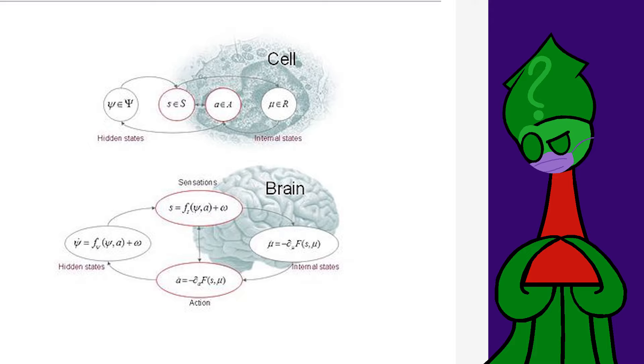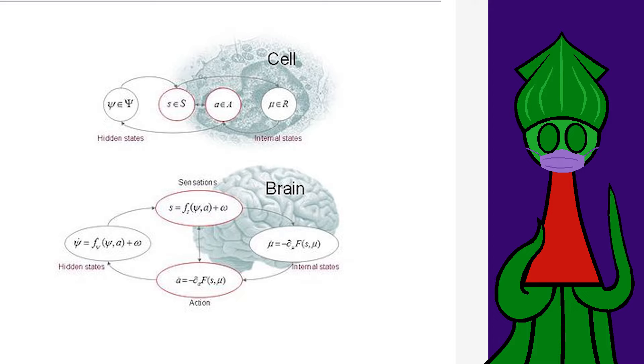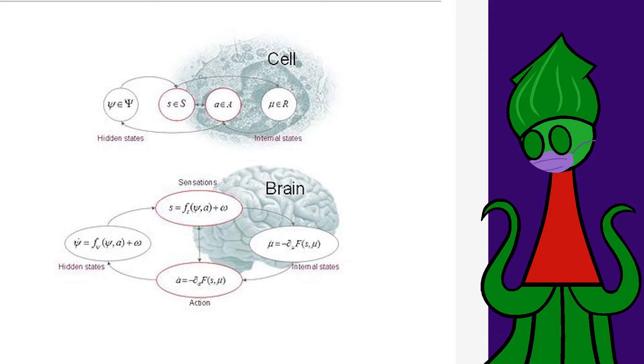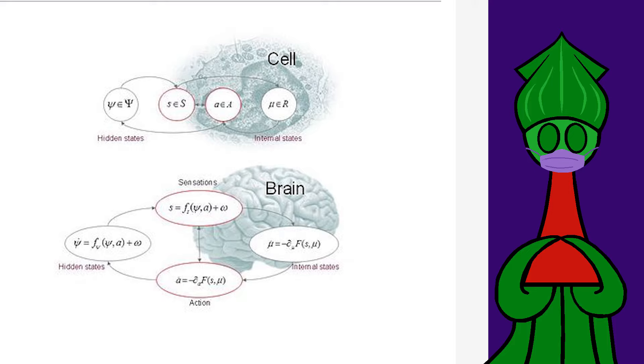Minimizing free energy is minimizing surprise. Sometimes the sensations the universe provides are just bewildering. A bewildered brain doesn't even know what its next action will be because it's never been bewildered like this before. To minimize surprise, the brain takes actions which make the universe less bewildering all the time. The brain finds loops, actions which lead to sensations it knows how to react to.